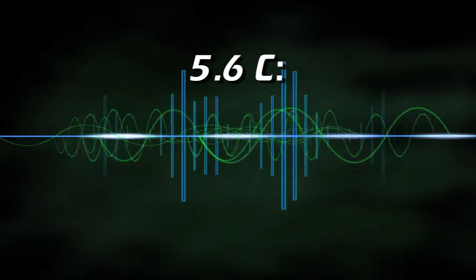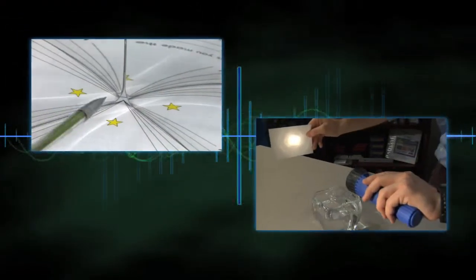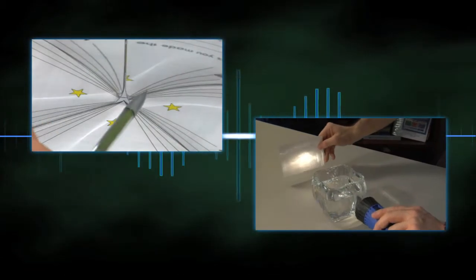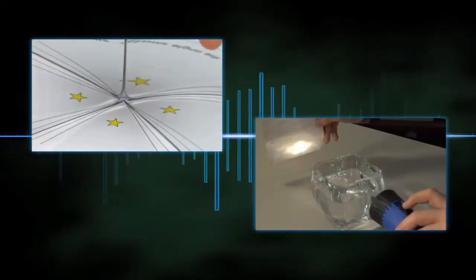5.6 C, Light. In this activity, students use the materials to investigate what happens when light is reflected and when light is refracted.